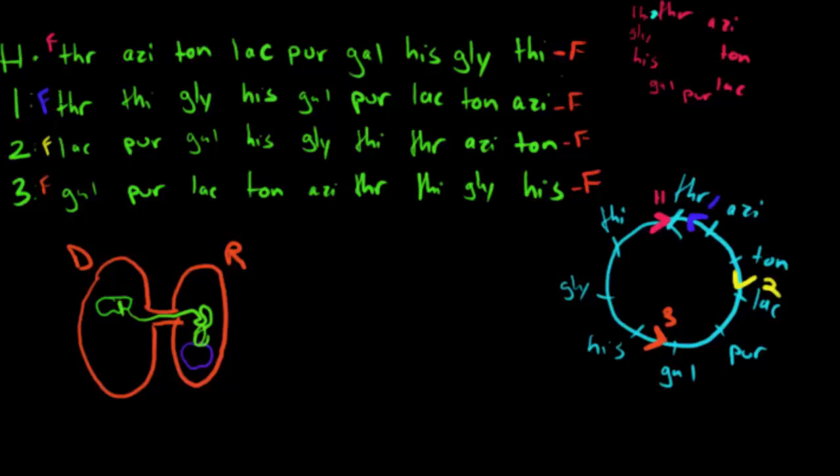So these three are just random bits of the HFR plasmid that came through to the recipient bacterium. And each one is its own circle. So the F-factor is always behind the first gene that comes through.